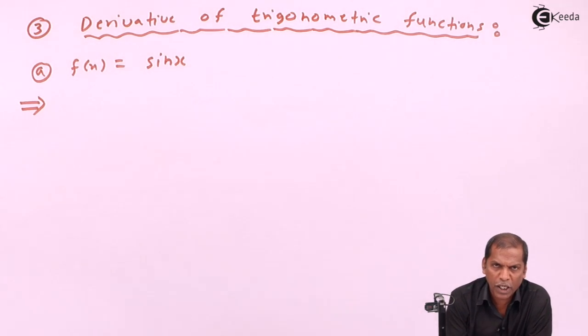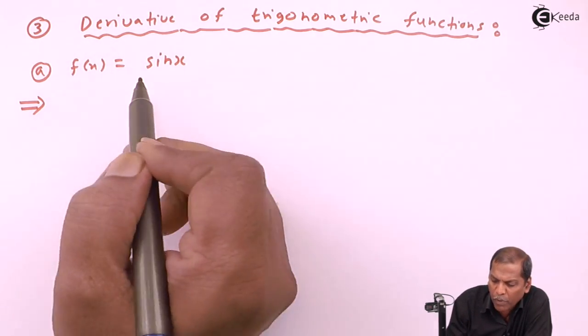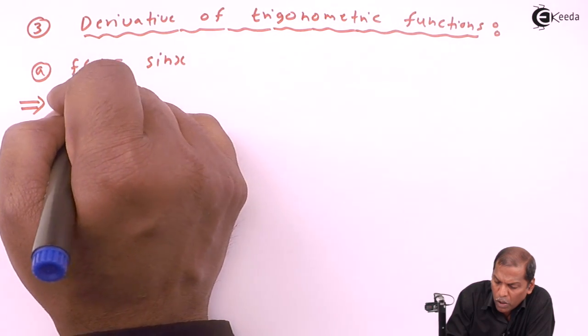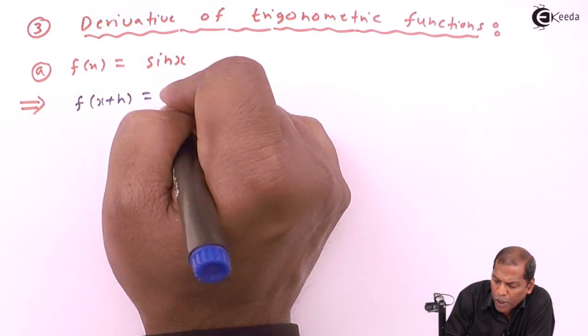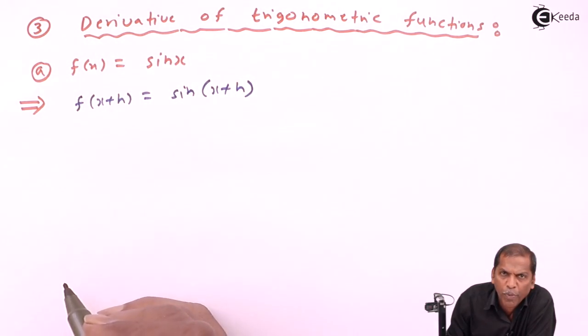Hello friends, now we see topic number three, derivatives of trigonometric functions of chapter differentiation. In topic number three, first we consider that f(x) is equal to sin x. Therefore the next step is f(x+h) is equal to sin(x+h).